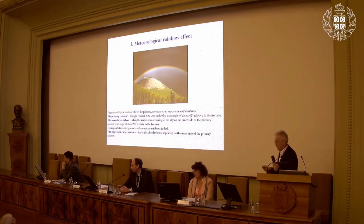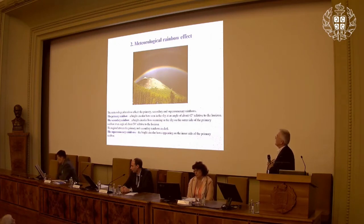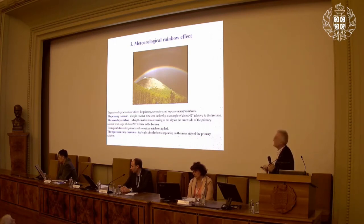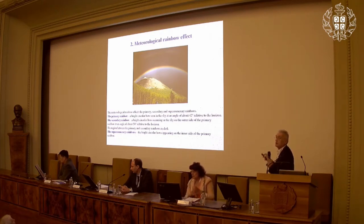This is a picture of the meteorological rainbow effect. The effect has more components: the primary, the secondary, and the supernumerary rainbows. The primary rainbow is a bright circular bow seen in the sky at an angle of about 42 degrees relative to the horizon. The secondary rainbow is another bright bow appearing on the outer side of the primary rainbow at an angle of 50 degrees. The region between them is dark. The supernumerary rainbows appear on the inner side of the primary rainbow as a number of hardly visible bows.